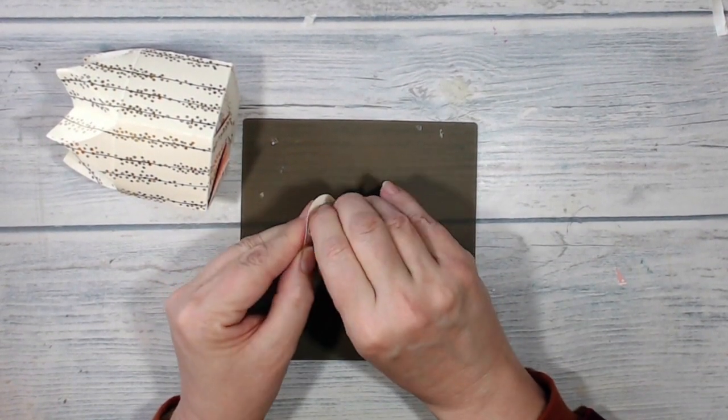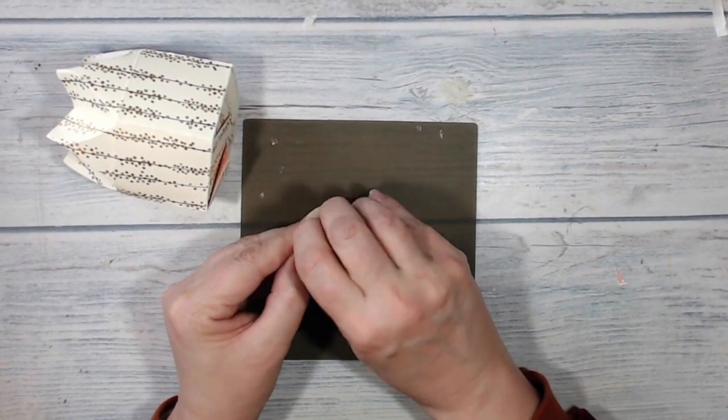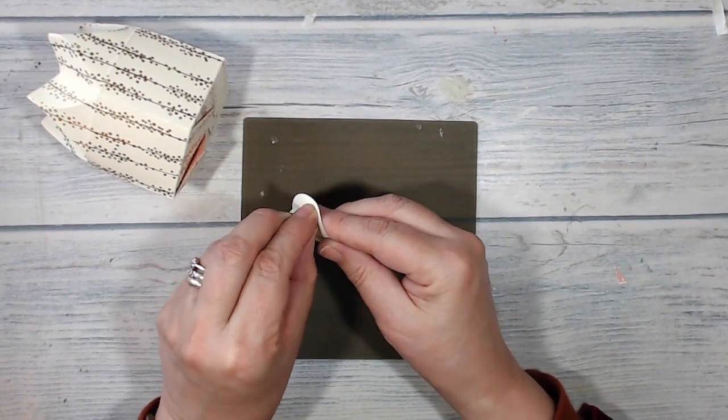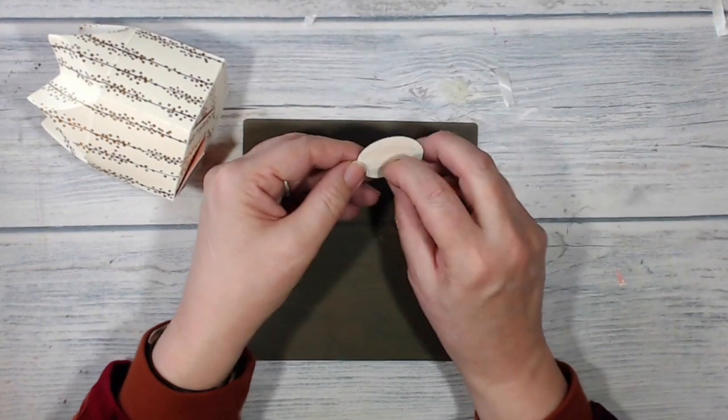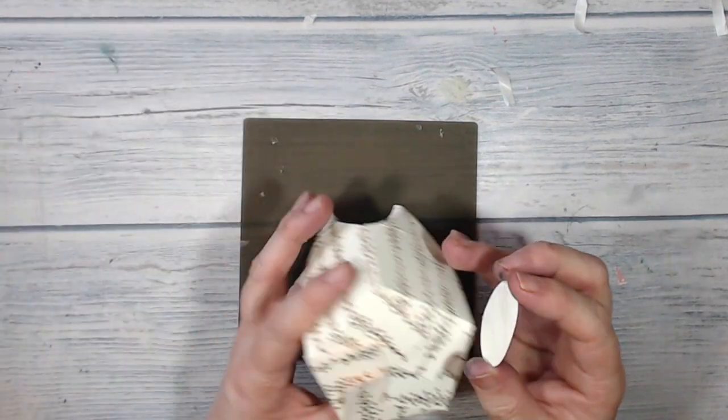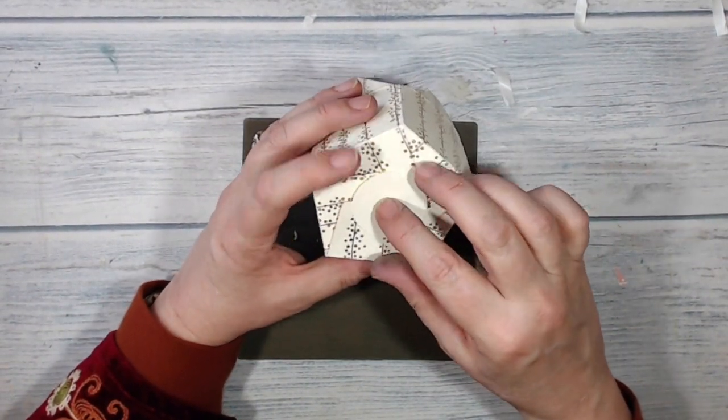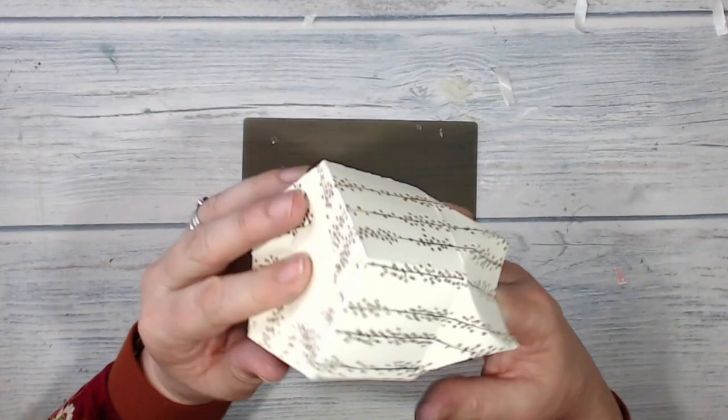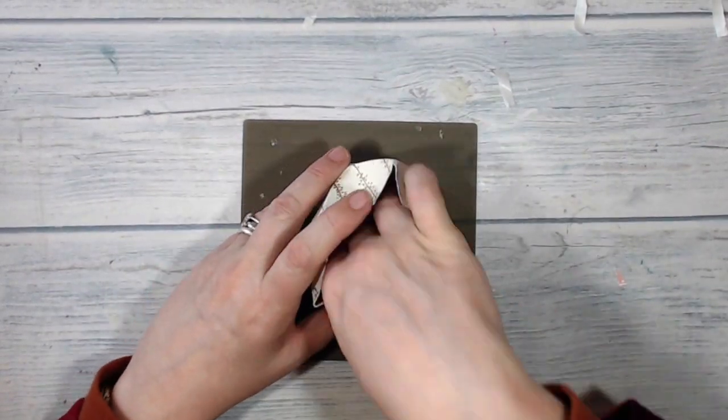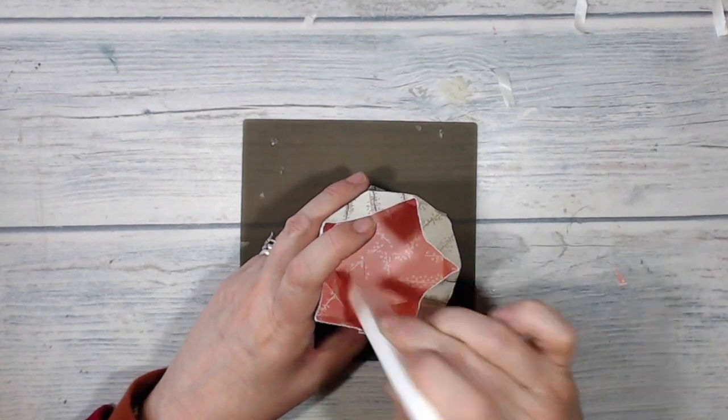To hold the base in place, I've punched a one and a half inch circle of Very Vanilla and I put a couple of pieces of tearing tape onto the back of it. Press that down with my bone folder.